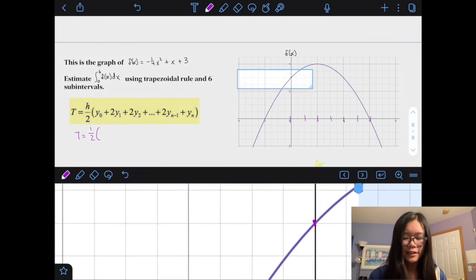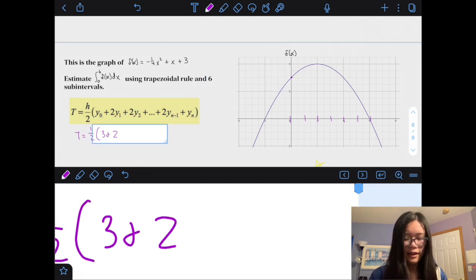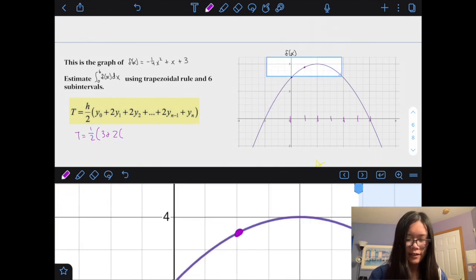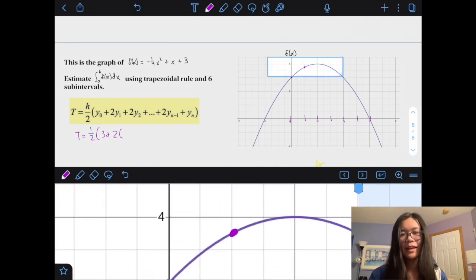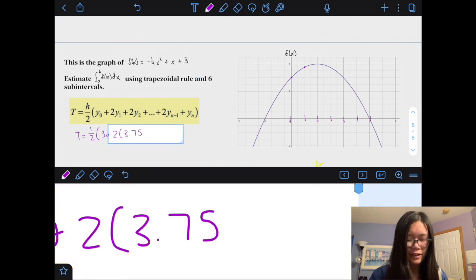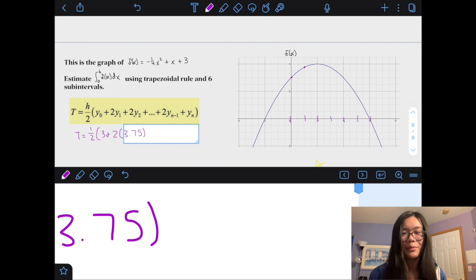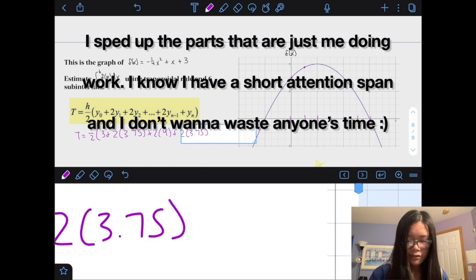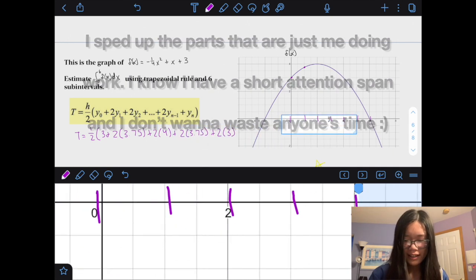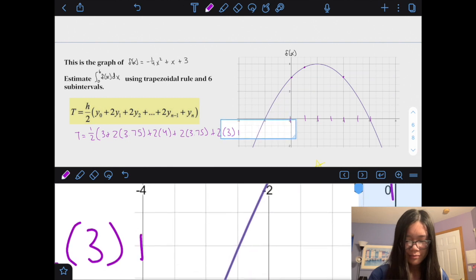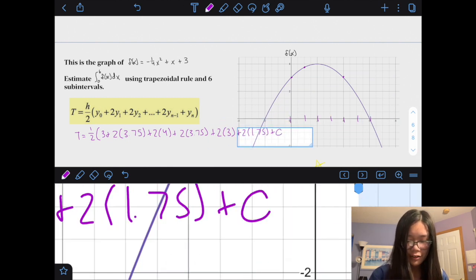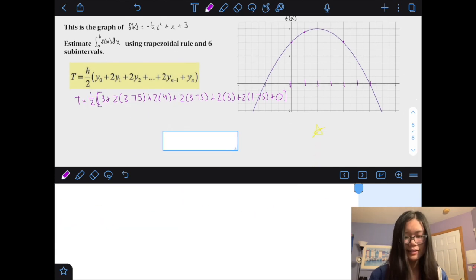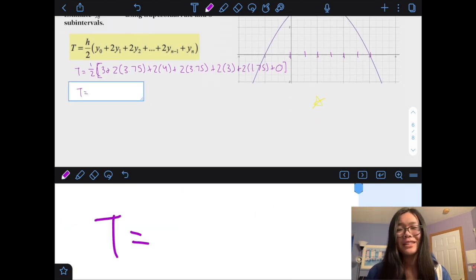So, there's the equation again. Then, our y0 would be 3, and then 2 times y1, which here, I promise it does actually equal 3.75. If you actually put it into the equation, it would equal 3.75 if you wanted to double check. 2 times y3, which is just 4, and then another 3.75 plus 2. I'm running out of room. This is 3 here. 2 times 1.75. And then the final value is just 0, so we can just put 0 there. And actually, this should have been a bracket. So, there's all that. It looks very gross. You could do it by hand, but I'm just going to use my calculator, because I don't want to deal with that.